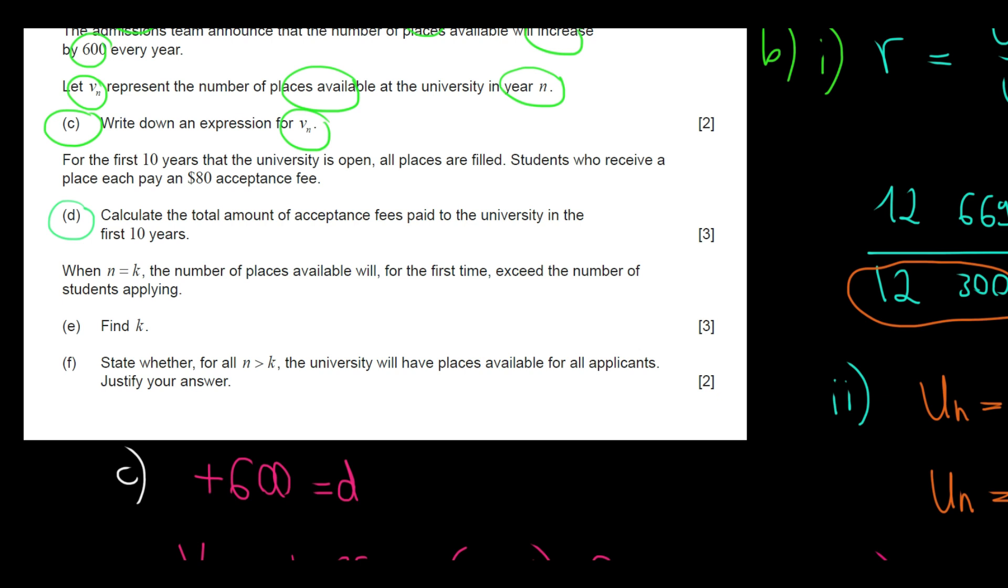Next, we go to question D. For the first 10 years that the university is open, all places are filled. Students who receive a place pay an $80 acceptance fee. Calculate the total amount of acceptance fees paid to the university in the first 10 years.